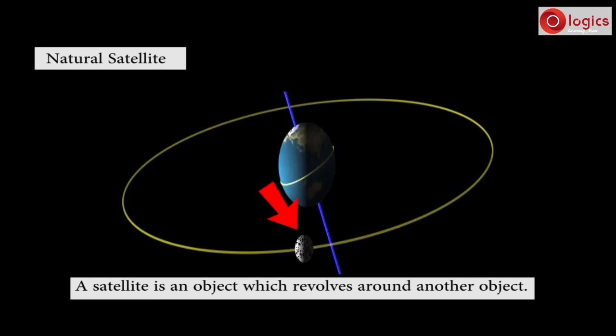Example for natural satellite is moon. Why moon is natural satellite? Moon is not man-made, it's just natural object. Why moon is not a planet? Moon revolving around earth. We cannot call moon is planet, since it is not revolving around sun.